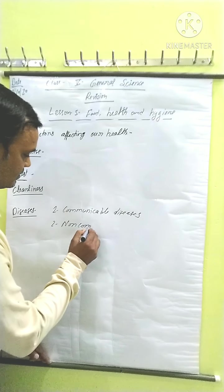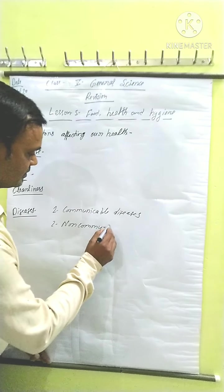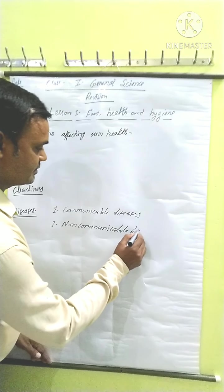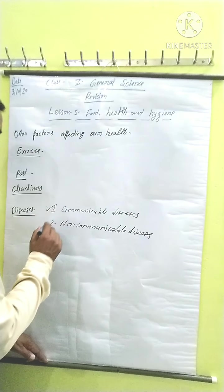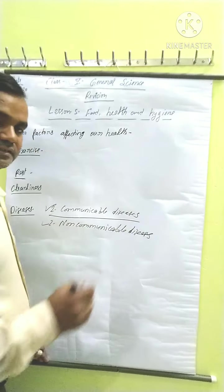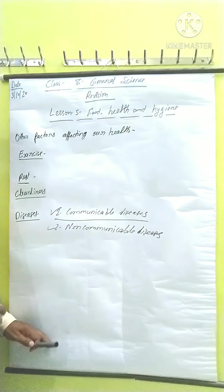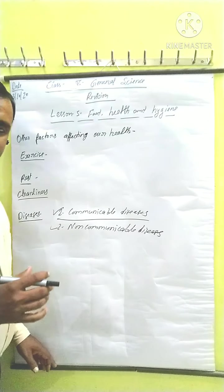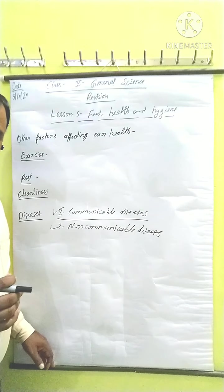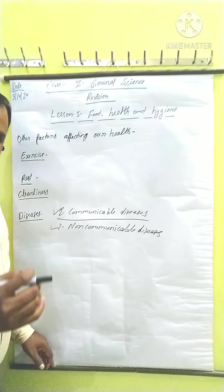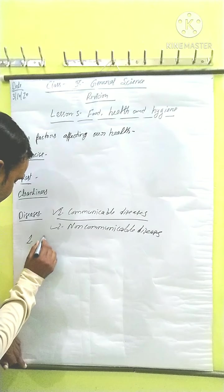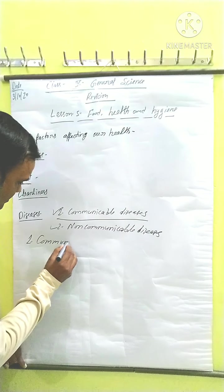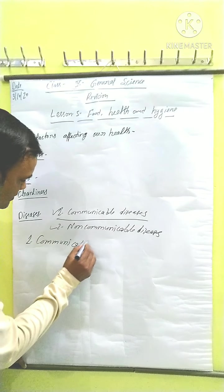Now, diseases. You know that diseases are of two types: communicable diseases and non-communicable diseases. First, we discuss communicable diseases. Communicable diseases are the diseases that can spread from a sick person to a healthy person. Such diseases are called communicable diseases.